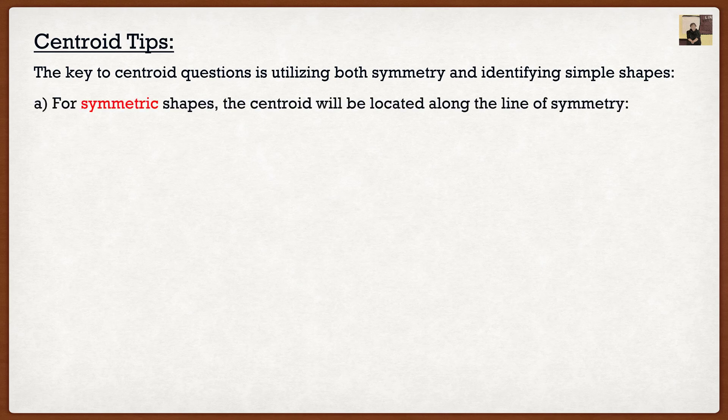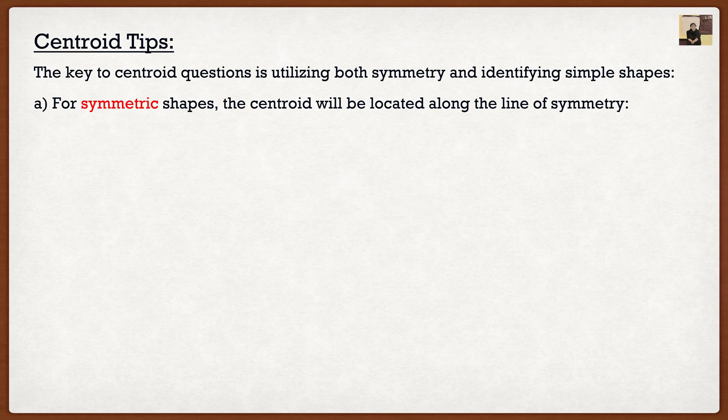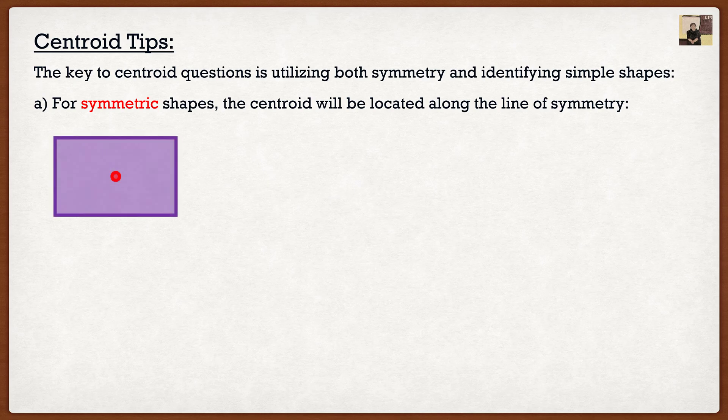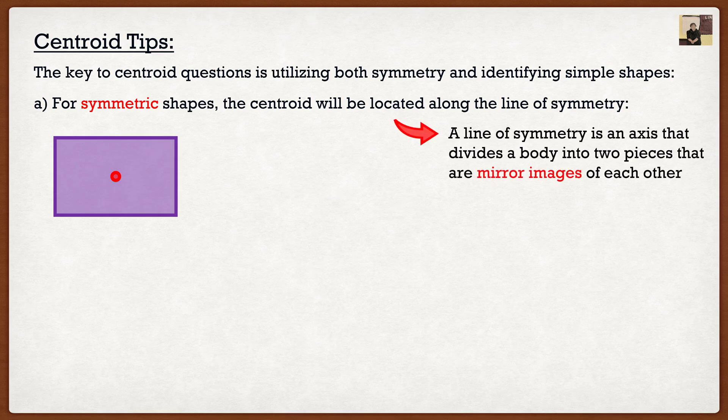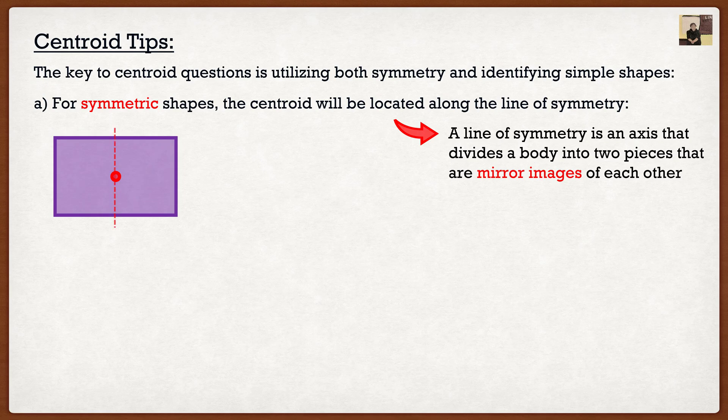For symmetric shapes, the centroid will always be located along a line of symmetry. You're saying, what? Clayton, can you please explain that? Let's take a rectangle. We've already discussed many times that the centroid of a rectangle is right in the center. And the reason why is because a rectangle has two lines of symmetry. Now, a line of symmetry is an axis or basically a line that divides the body into two pieces that are mirror images of each other.